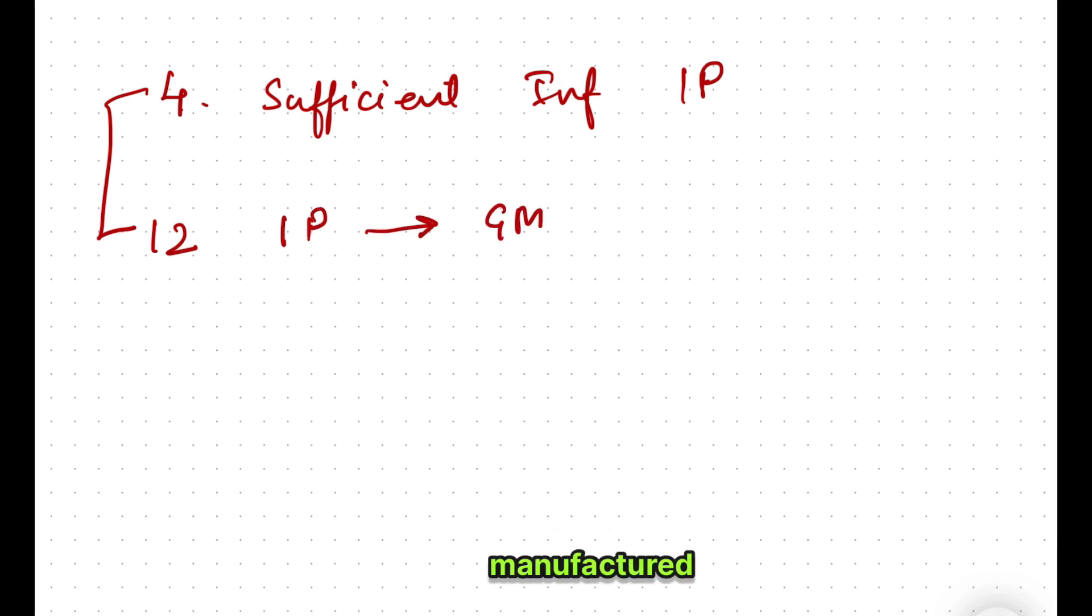Coming back to our principle: principle number four is sufficient information on IP, investigator product. Similarly, the 12th principle is also on IP. You can link these principles together. The 12th principle says that it should be manufactured as per good manufacturing practices, GMP. So fourth principle and 12th principle - two principles are on investigational product. One is talking about sufficient information should be available on IP, another is saying it should be manufactured as per GMP.